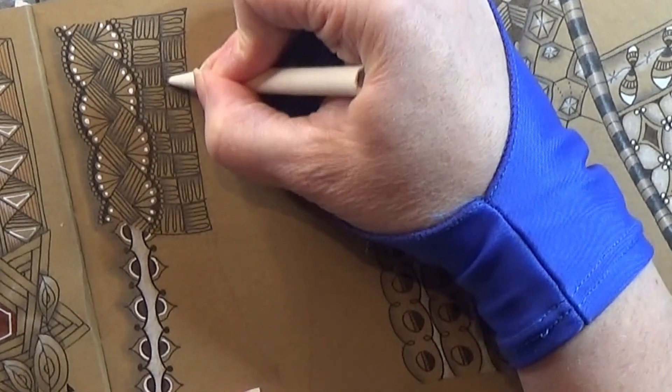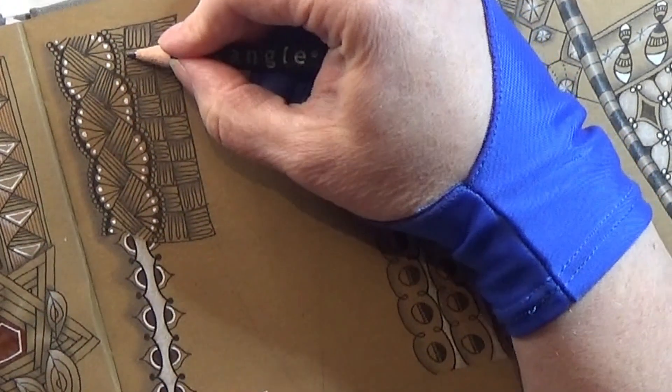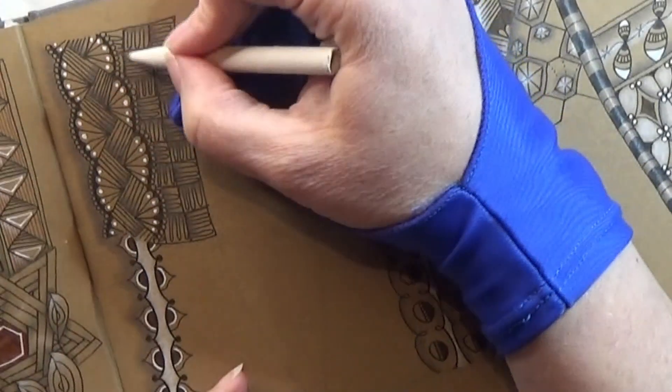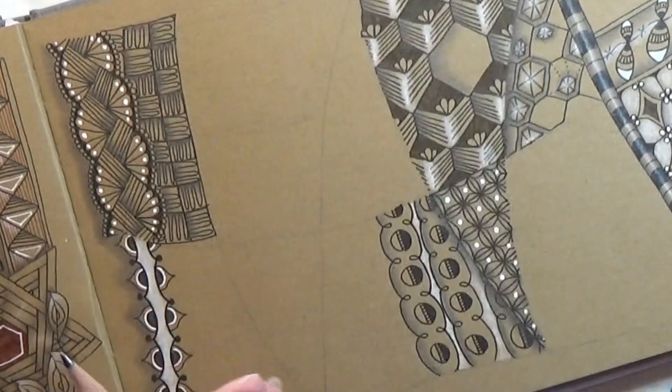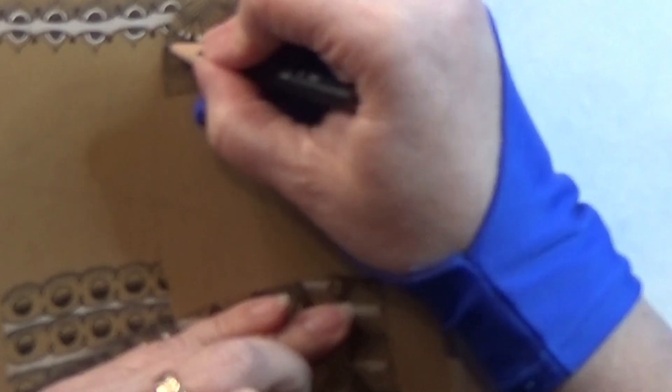And using my tortillion to make it into a shadow. Oops, that was the wrong one. And I missed one.